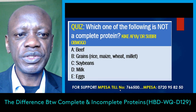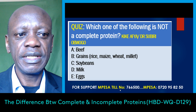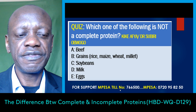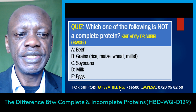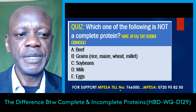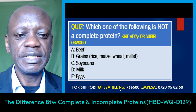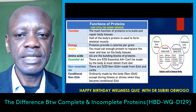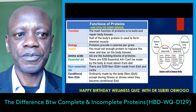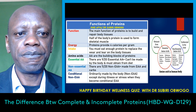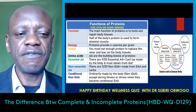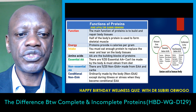Which one of the following is not a complete protein? A: beef, B: grains, C: soybeans, D: milk, E: eggs. Okay, so proteins play a very important role in our diet.